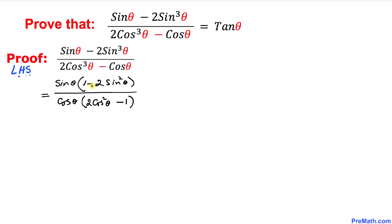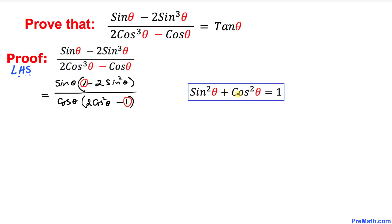Now let's go ahead and manipulate this fraction. Wherever we see 1 in the numerator, I am going to replace it with sin square theta plus cosine square theta. This trigonometric identity — sin square theta plus cosine square theta equals 1 — is very crucial in proving trigonometric identities.